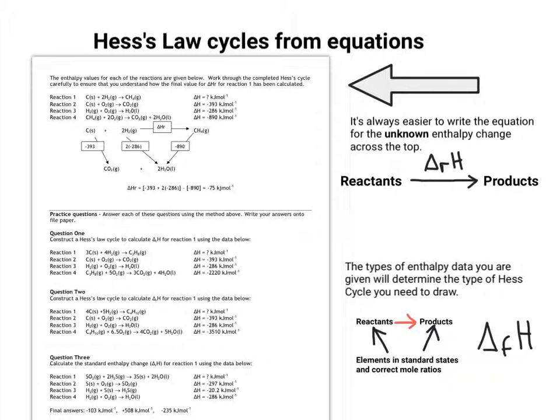So if you're given delta FH data in a table, or the equations that you have represent the formation of something from its constituent elements, then you can use this type of Hess diagram. Reactants go into products across the top, that's your delta RH. The elements are listed in their standard states and the correct mole ratios to make either the reactants or the products, and therefore you can put in the delta FH data. And from that you can follow an indirect route.